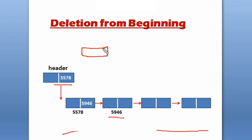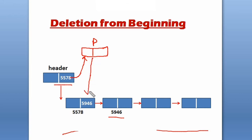We create a pointer — the pointer has two parts: a data part and a link part. We copy the address that the header holds into this pointer. What I said is that the address the header holds, we copy it into the pointer. This means the pointer is now pointing to the first node.